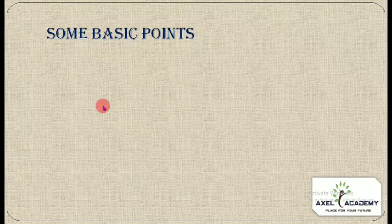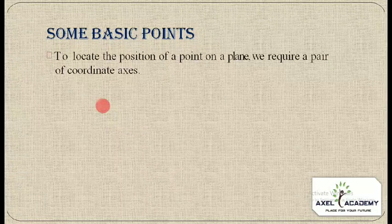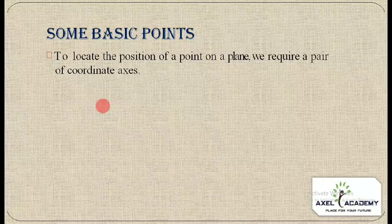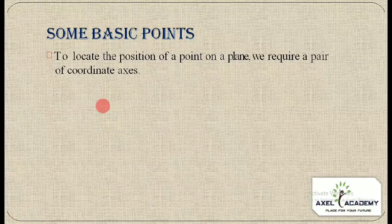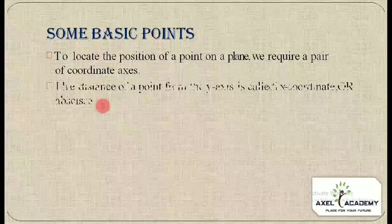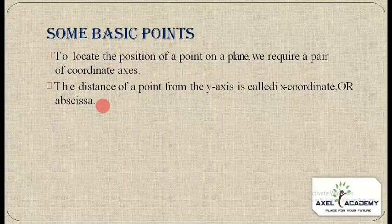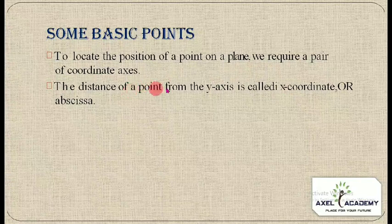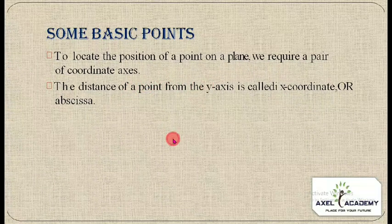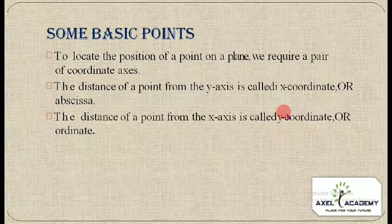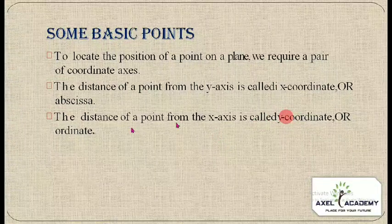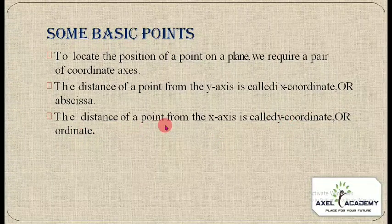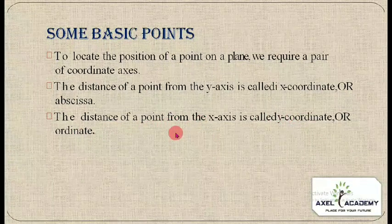To locate the position of a point on a plane, we require a pair of coordinate axes. The distance of a point from the y-axis is called the x-coordinate, also known as the abscissa. Similarly, the y-coordinate is called the ordinate, and it is the distance from the x-axis.